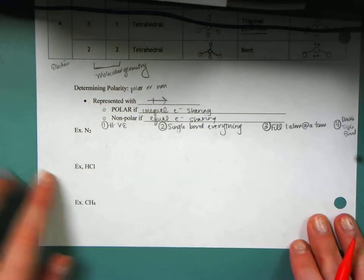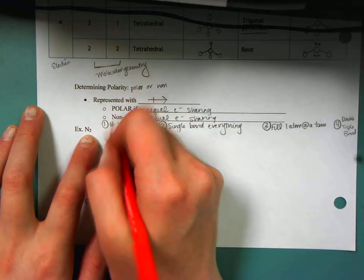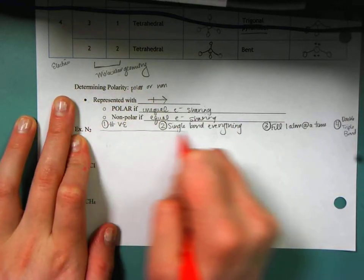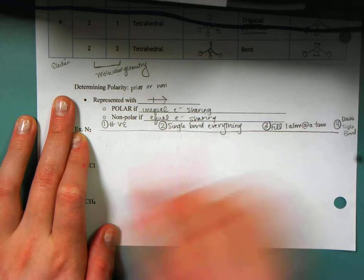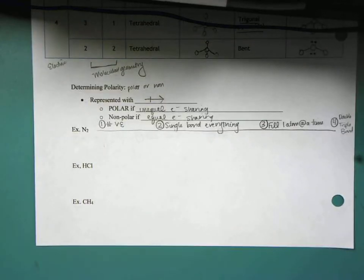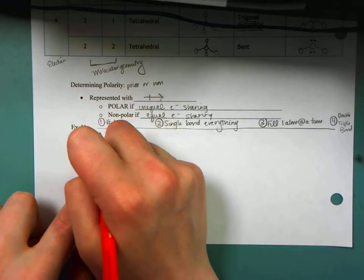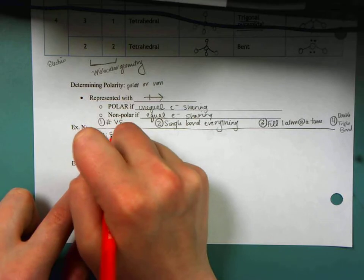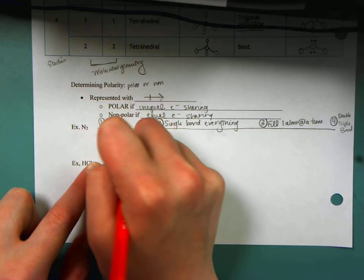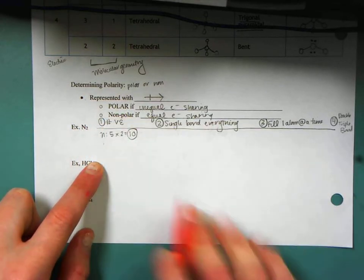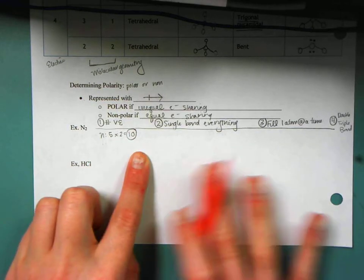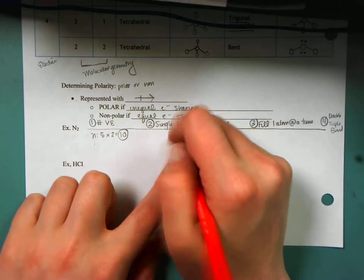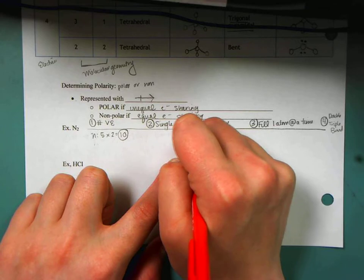So I'm going to kind of model this with Lewis dot structures. So the very first one I have, N2, I'm going to go through this step-by-step process again. So here are my four steps for making the correct Lewis dot structure. I'm going to start with N2. I know that nitrogen has five electrons, and there are two nitrogens, which means I have a total of 10 electrons to place. I start off by single bonding everything. So I've got nitrogen and nitrogen.